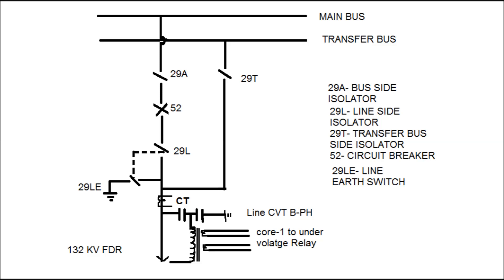The general arrangement for a transmission line feeder is shown in this figure. Here, 29A is the main bus side isolator, 29T is the transfer bus side isolator, 29L is the line side isolator, and 52 is the circuit breaker. 29LE is the line earth switch, and the CBT has been shown in the B phase.